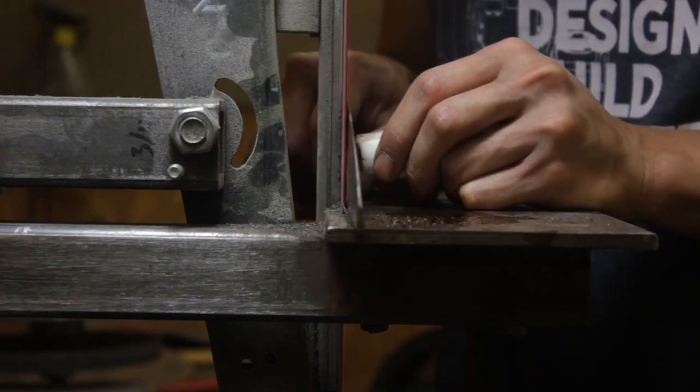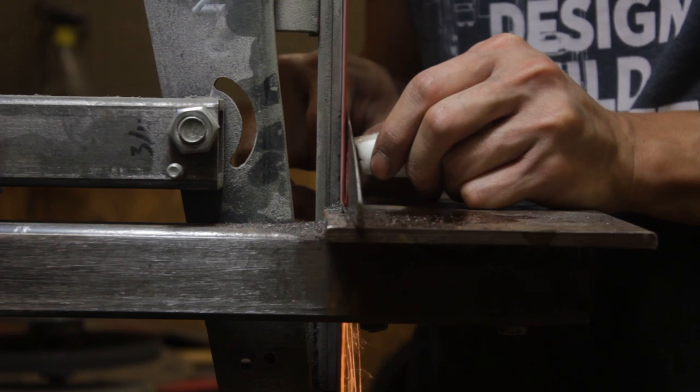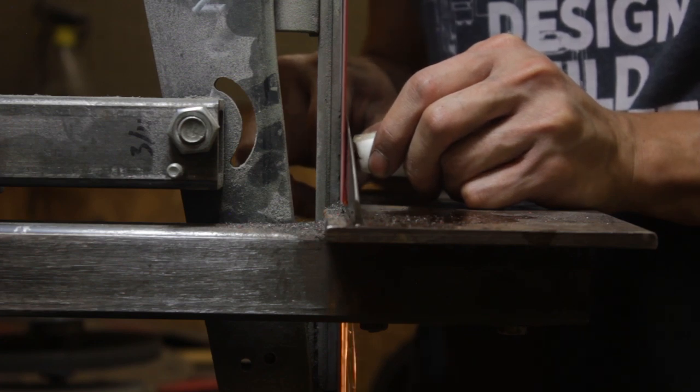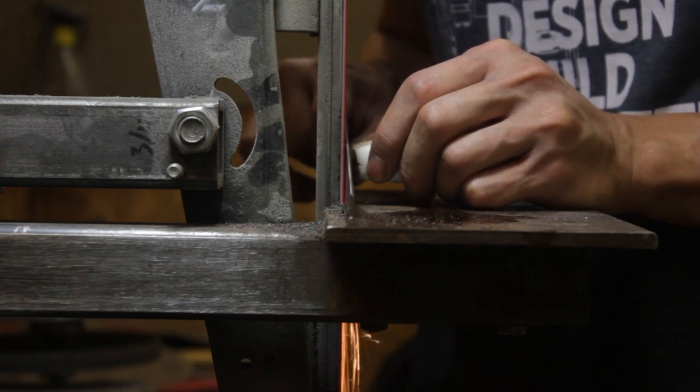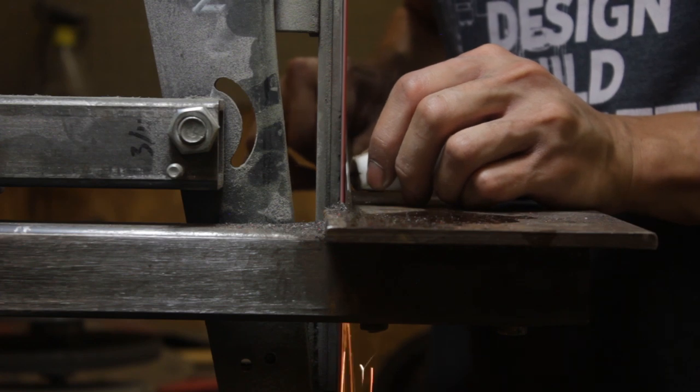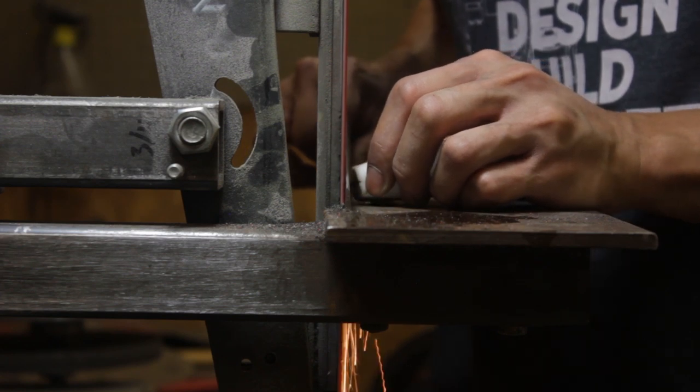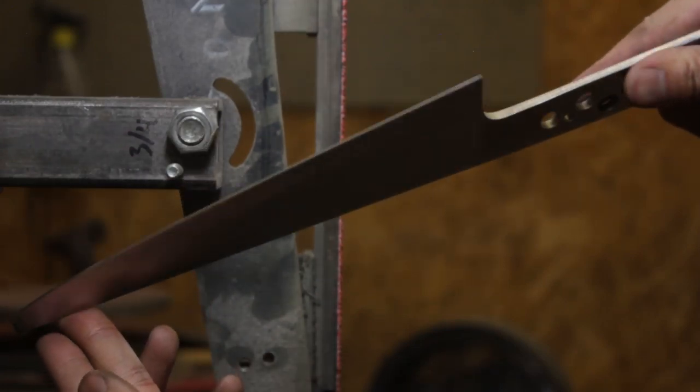When removing the bulk material, I have a lot of steel there and it doesn't heat up as fast. I can lean into it and move slower, thus removing more material. When I work towards the edge and the tip, there's less mass there and it'll heat up much quicker. Now I reduce my pressure and move the knife along faster. With a fresh lower grit belt, there's basically minimal heat buildup.